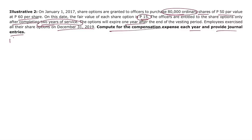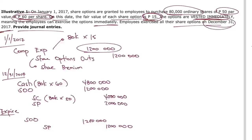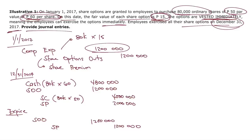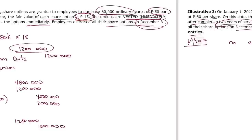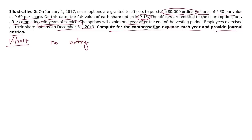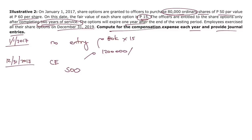On January 1, 2017 (grant date), no entry is recorded — employees have not yet worked. We follow accrual accounting: recognize expense only when incurred. The first recognition date is the first balance sheet date, December 31, 2017. Debit compensation expense, credit share options outstanding for 600,000 pesos (1.2 million divided by 2 years).